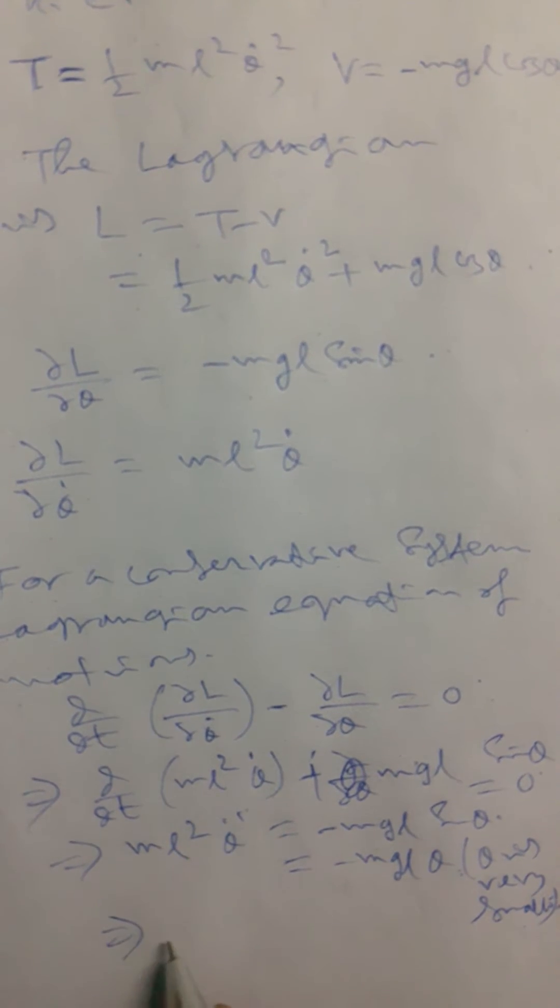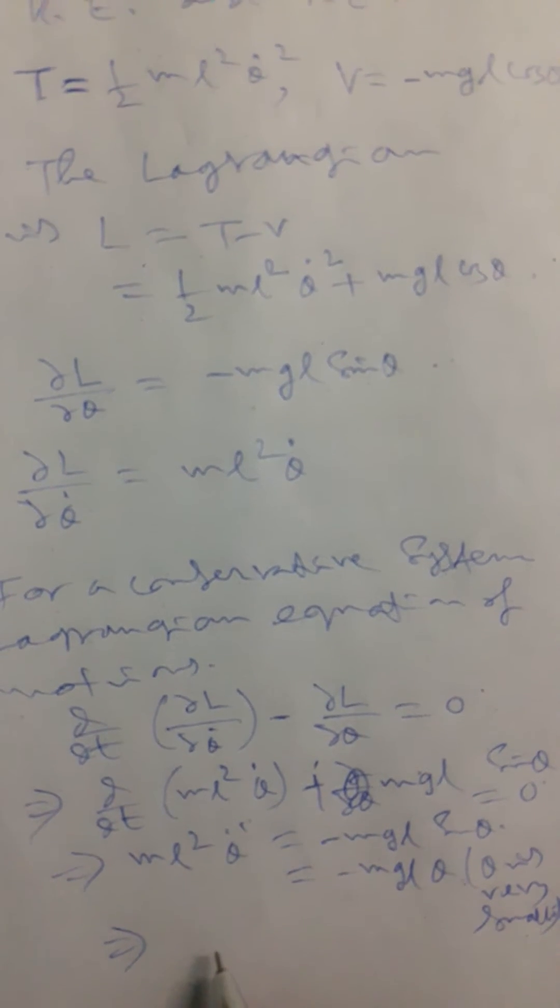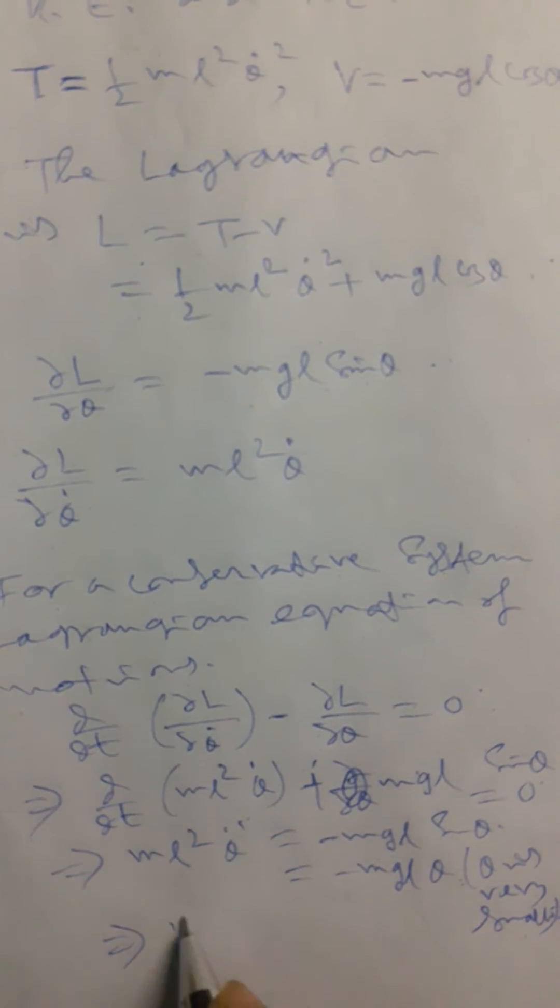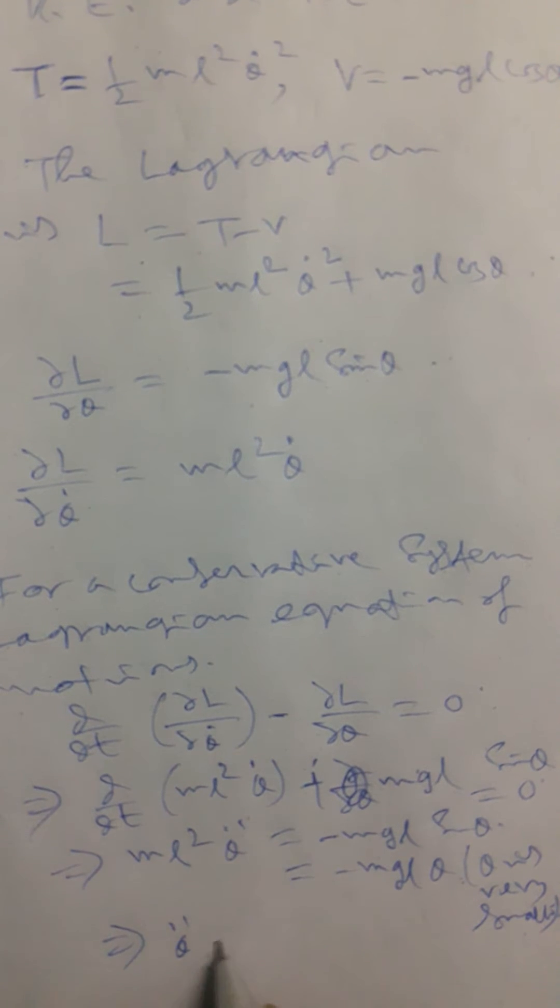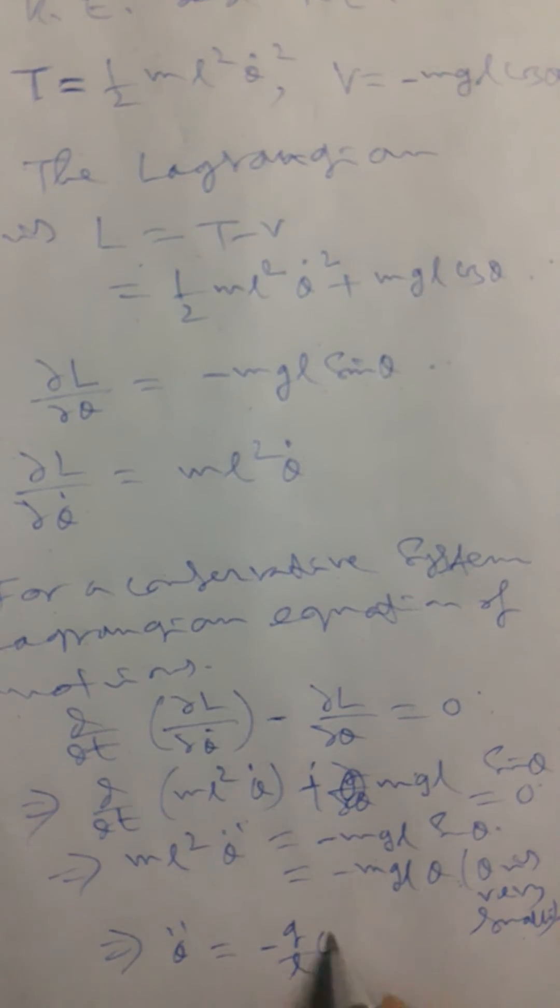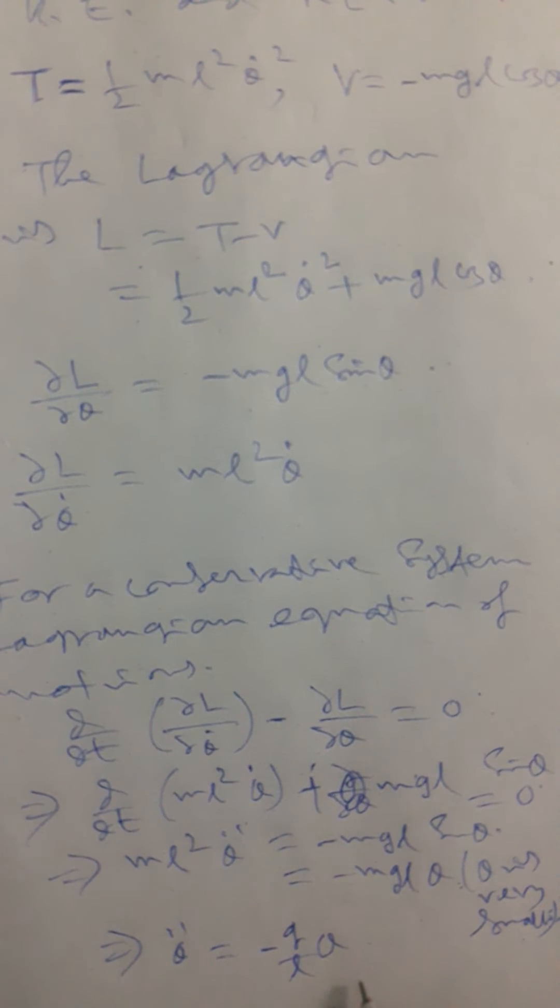So it's clear: θ̈ = -(g/L)θ, which is the required equation, the Lagrangian equation of motion.